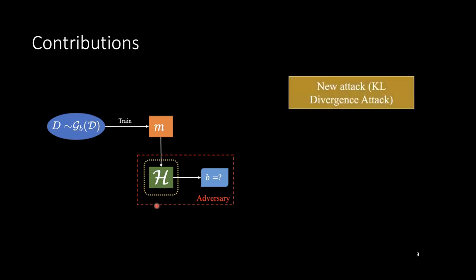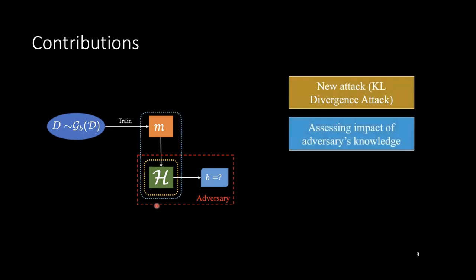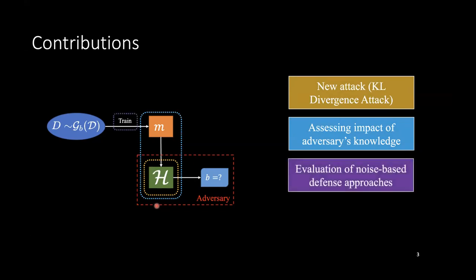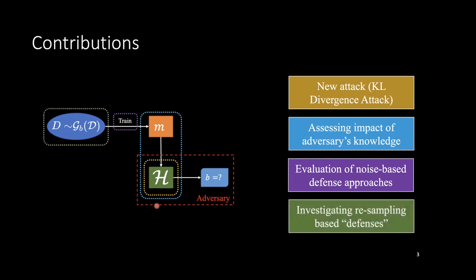First off, we propose a new black box attack, which is the KL divergence attack. We then look at the different assumptions that we implicitly end up making in the black box setup and how they impact inference risk. We also try looking at noise-based defenses that usually end up working really well for security and privacy in machine learning. And finally, we see what ends up happening if you try the trivial defense of resampling your actual data set itself.